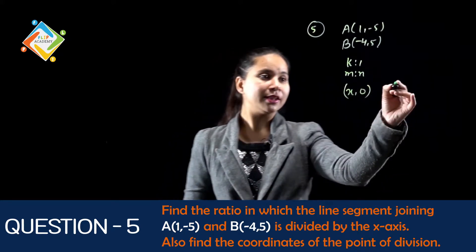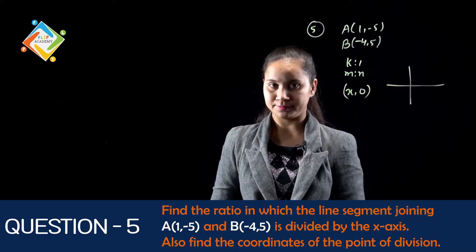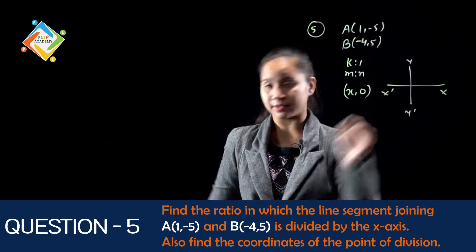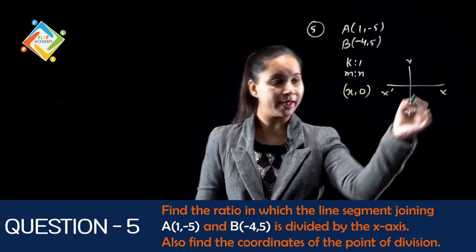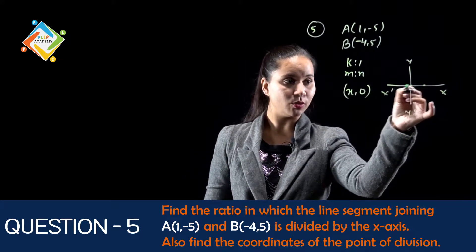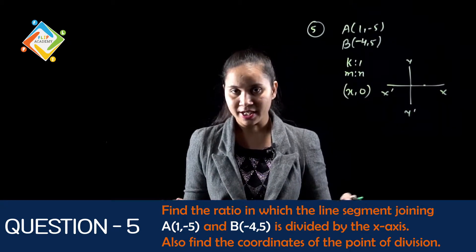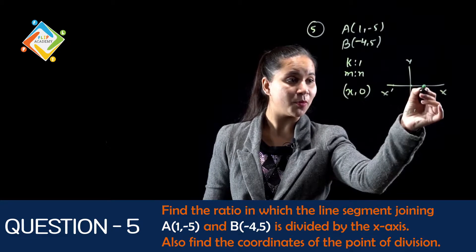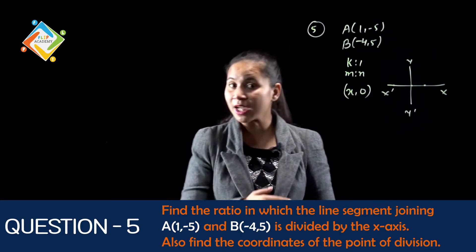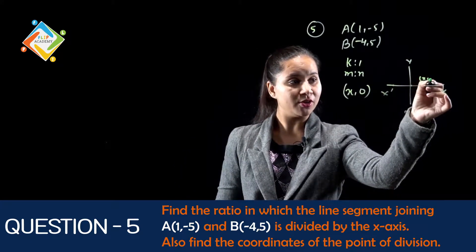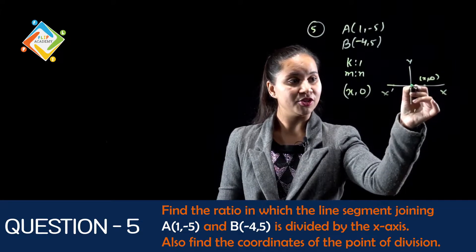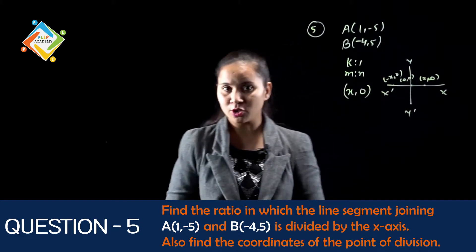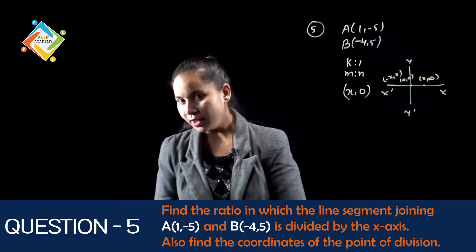0 — क्यों होता ऐसा? क्योंकि this is the Cartesian plane. अगर कोई point x-axis पर lie करता है तो उस condition में वो y पर कोई भी distance travel नहीं कर रहा है। अगर वो y पर distance travel नहीं कर रहा है तो उस condition में सभी points के जो coordinate होंगे वो ya toh x,0 होंगे, ya 0,0 होंगे, ya minus x,0 होंगे। So, assume the coordinates are (X, 0).